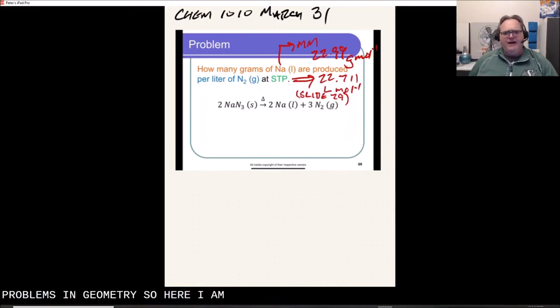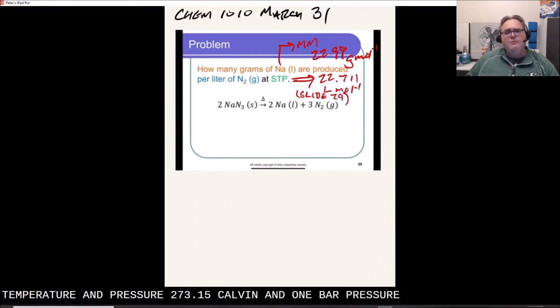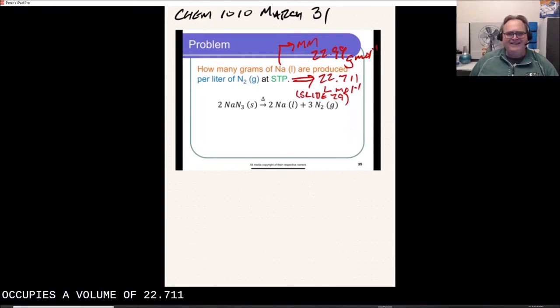So here our first problem, how many grams of sodium liquid are produced per liter of nitrogen gas at STP. On slide 29, we would have seen standard temperature and pressure, 273.15 Kelvin and one bar of pressure. One mole of gas occupies a volume of 22.711 liters.